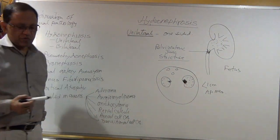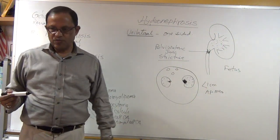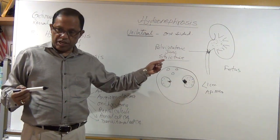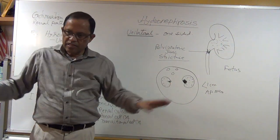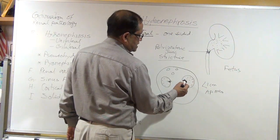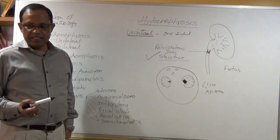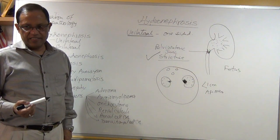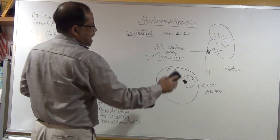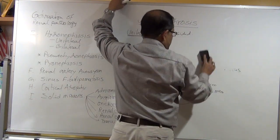After birth, this baby needs to be followed up. If it is not due to pelvi-ureteric stricture, it usually resolves by six months. But if after six months it is getting bigger, the patient needs surgery.